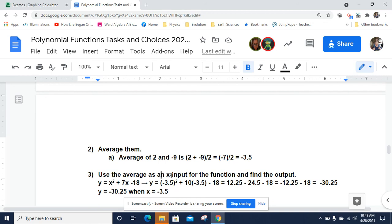And then I use the average as an x input for the function. And so I plug in this negative 3.5. I square it. I get negative 3.5 squared plus 7 times negative 3.5 minus 18. So negative 3.5 squared is 12.25. Yes, I used a calculator. And you can too. And 7 times negative 3.5 is negative 24.5, which happens to be the negative of twice that. So we add those, to put those together, we get negative 12.25. And then we're subtracting 18.